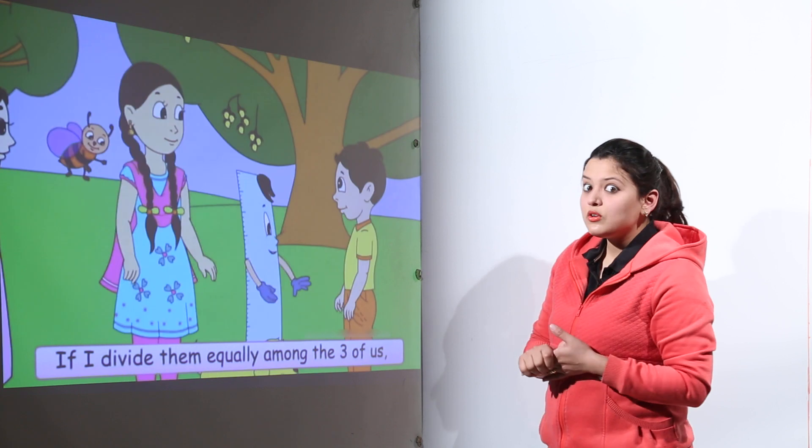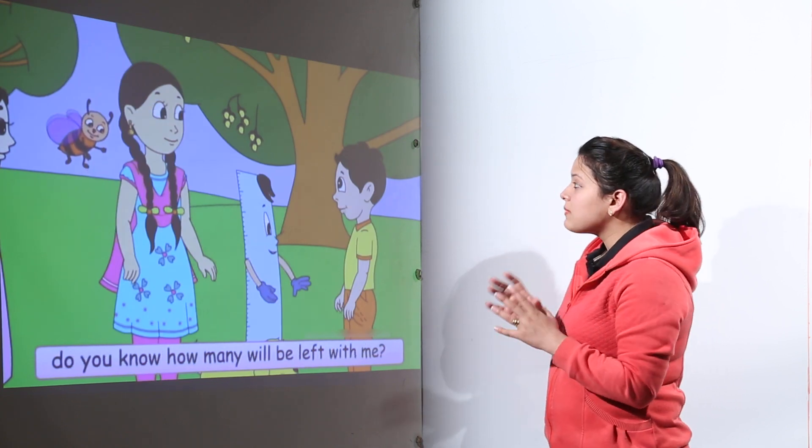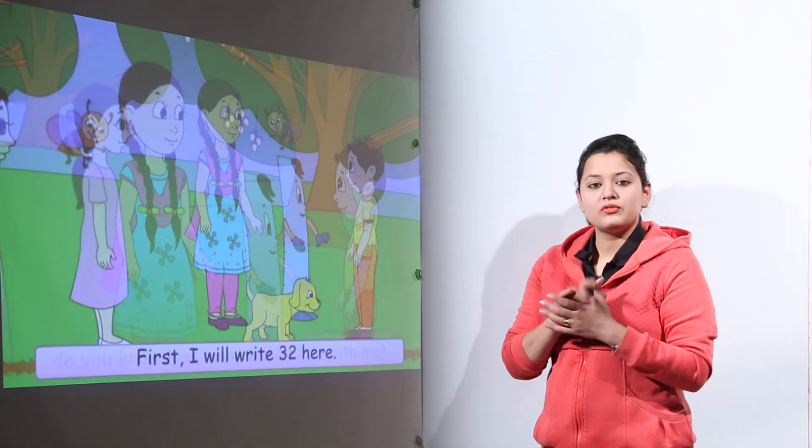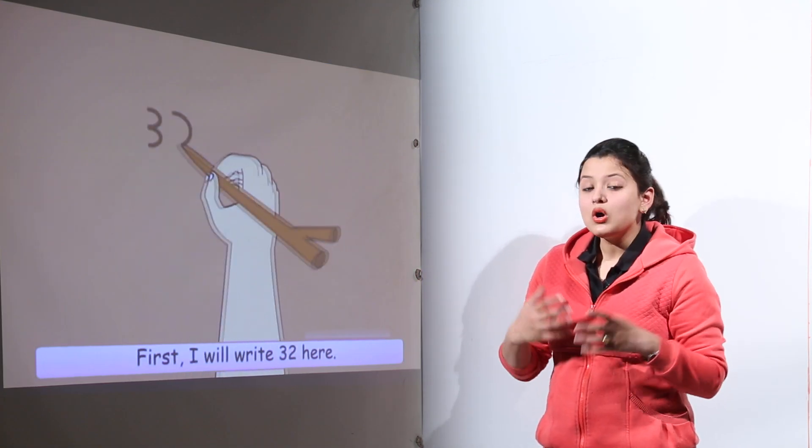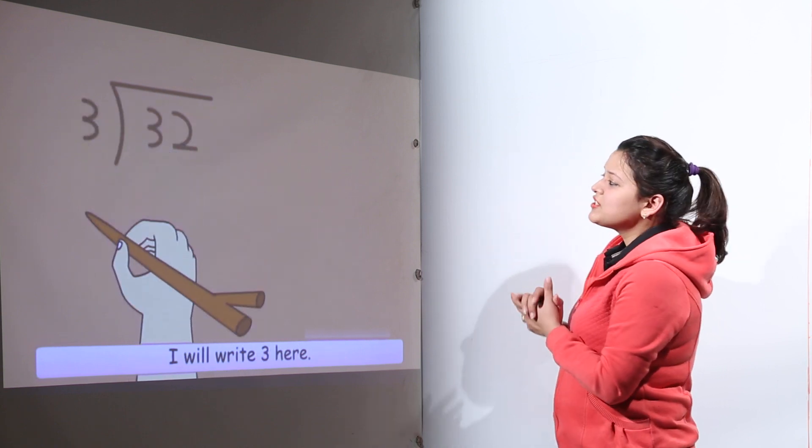Now you can see that Chinu had got 32 marbles to play with. And he wanted to divide these marbles equally among the 3 of them. And he wanted to know how many will be left when he had divided. So what did he do? He used the division method.